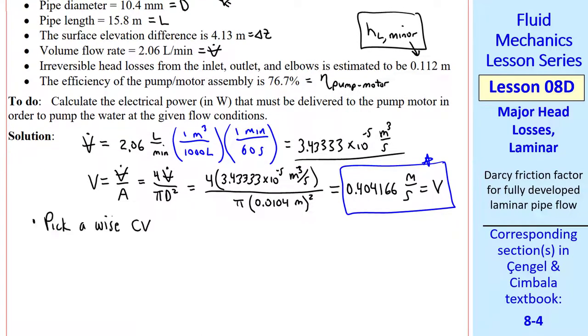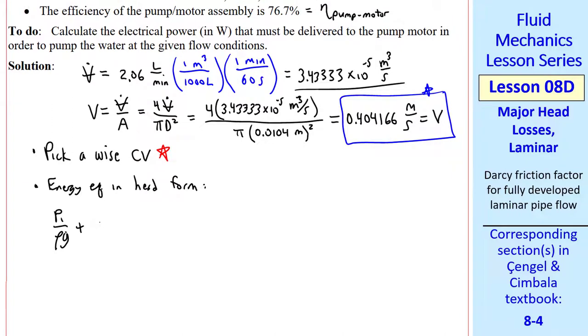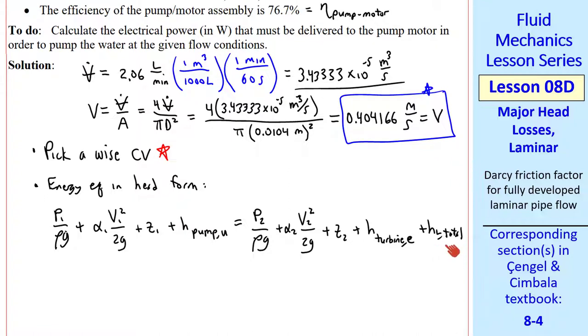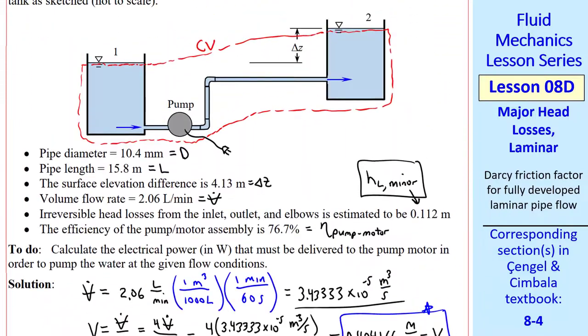Now let's analyze the problem. The first step is to pick a wise control volume. For this problem, it makes sense to pick the control volume inlet just below the surface at 1. We want to cut through this electrical wire, and then our outlet will be just below surface 2. Now we write our energy equation in head form: P1 over rho g plus alpha 1 V1 squared over 2 g plus Z1 plus the useful head provided by the pump, equal P2 over rho g plus alpha 2 V2 squared over 2 g plus Z2 plus the head extracted by the turbine plus HL total. This is the same equation we had previously except I'm now using HL total instead of HL since we will consider both major and minor losses. Let's examine the terms. By our choice of control volume, P1 is P atmosphere and P2 is P atmosphere, so these two terms cancel.